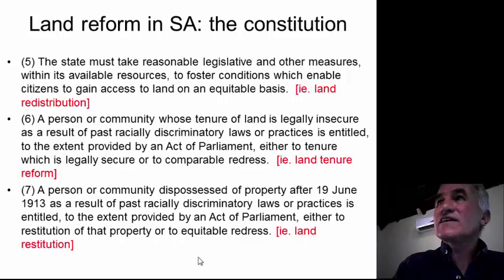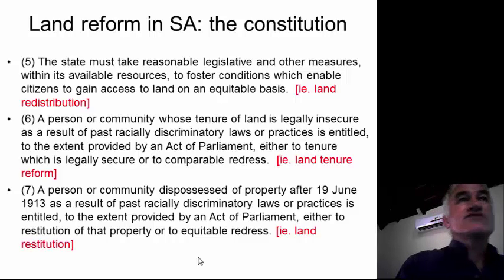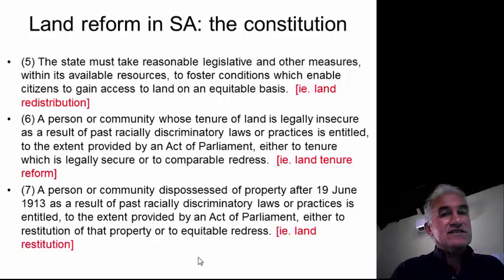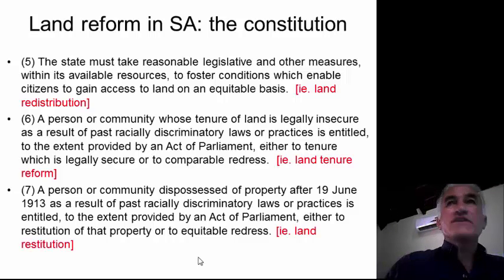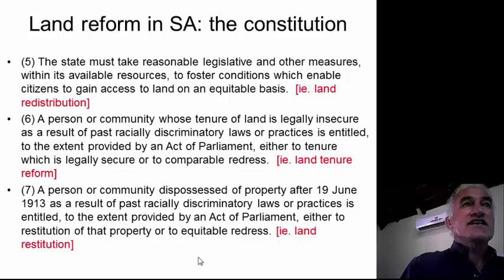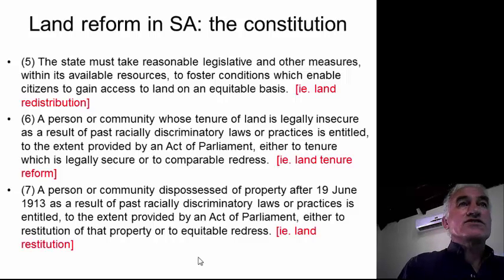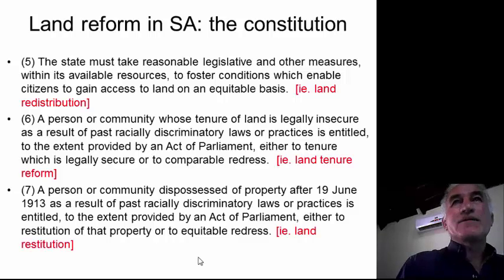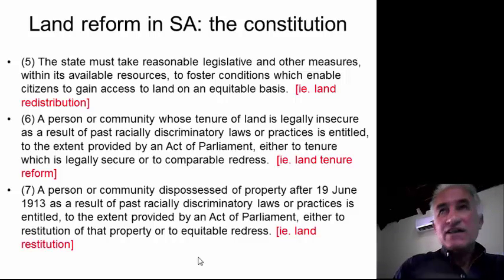The key reference point for thinking about land reform is our democratic constitution, which we fought so hard to achieve. This is a quote from the property clause — Section 25 — which deals with property rights and land. It was a controversial section, negotiated and bargained over right until the very last moment before the new constitution was adopted. The old vested interests were trying to protect their property rights, while progressive forces were pushing for fundamental reform. The result was a compromise: the property clause.